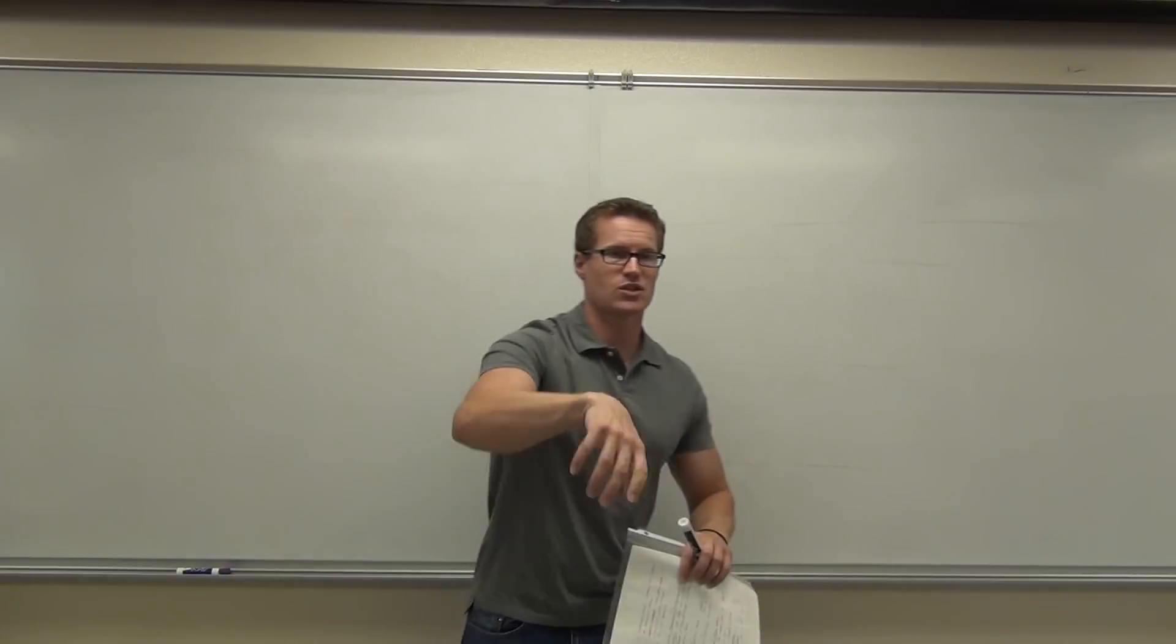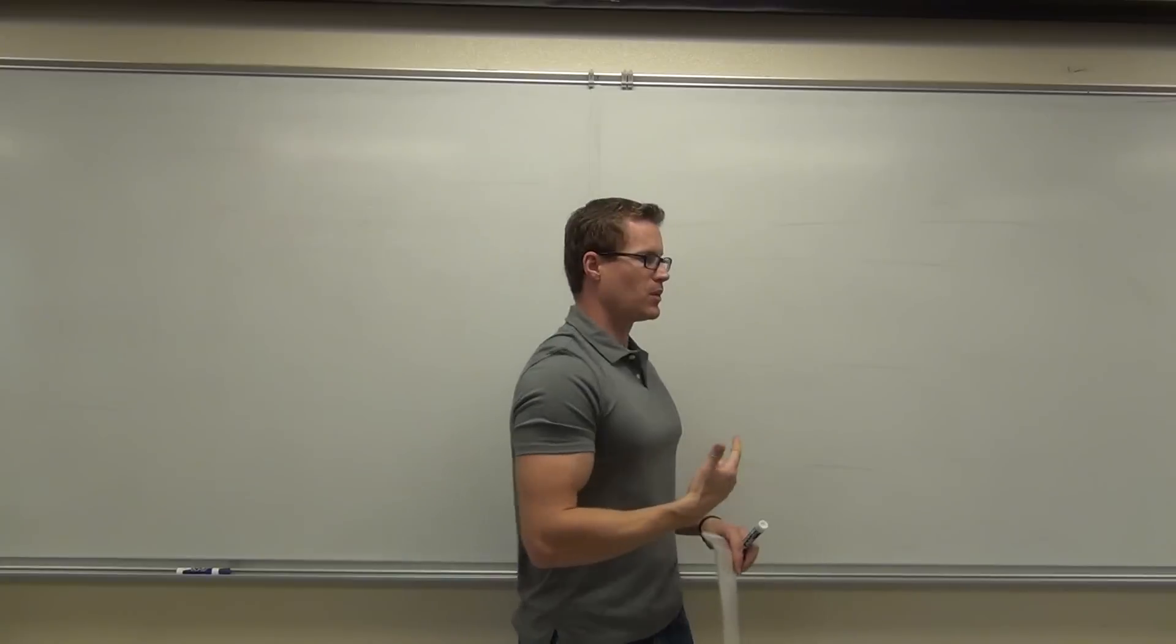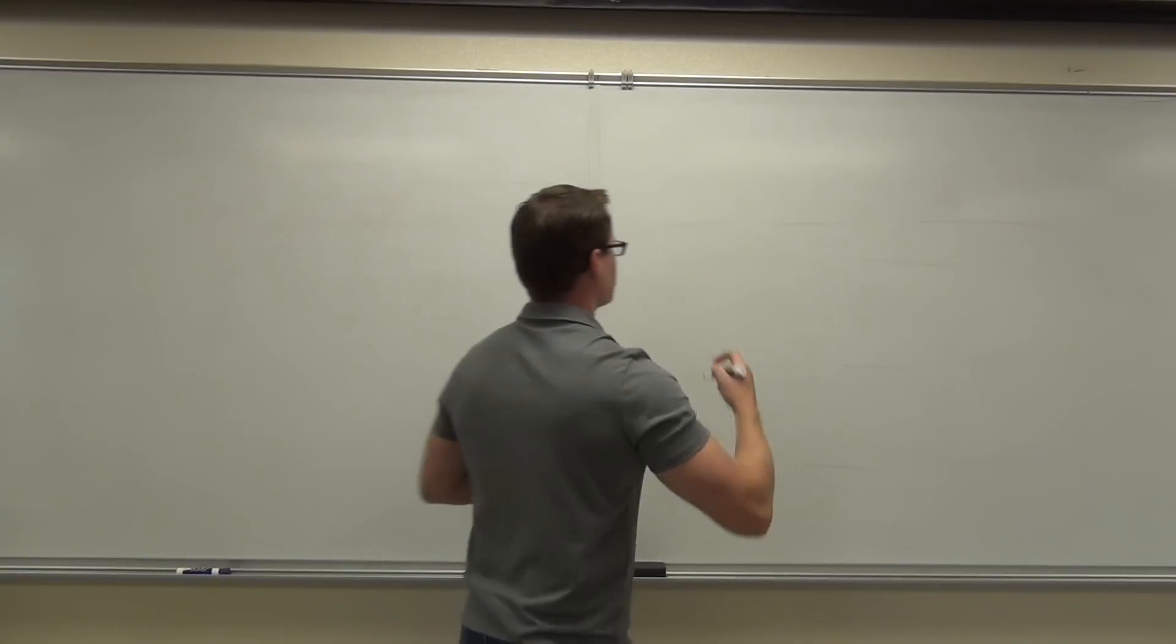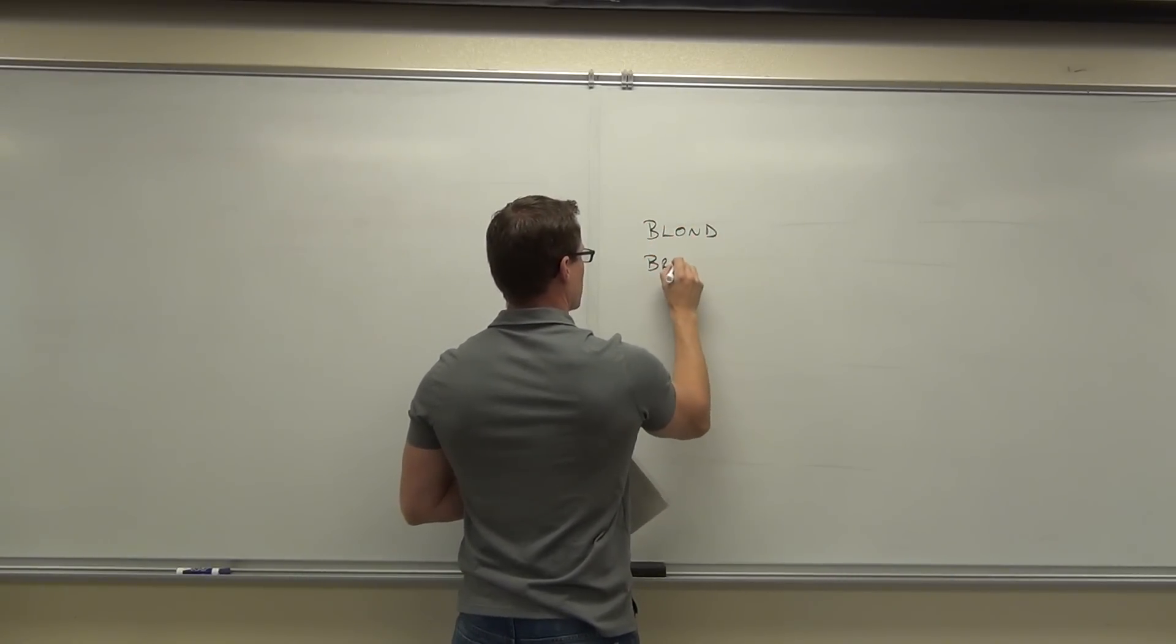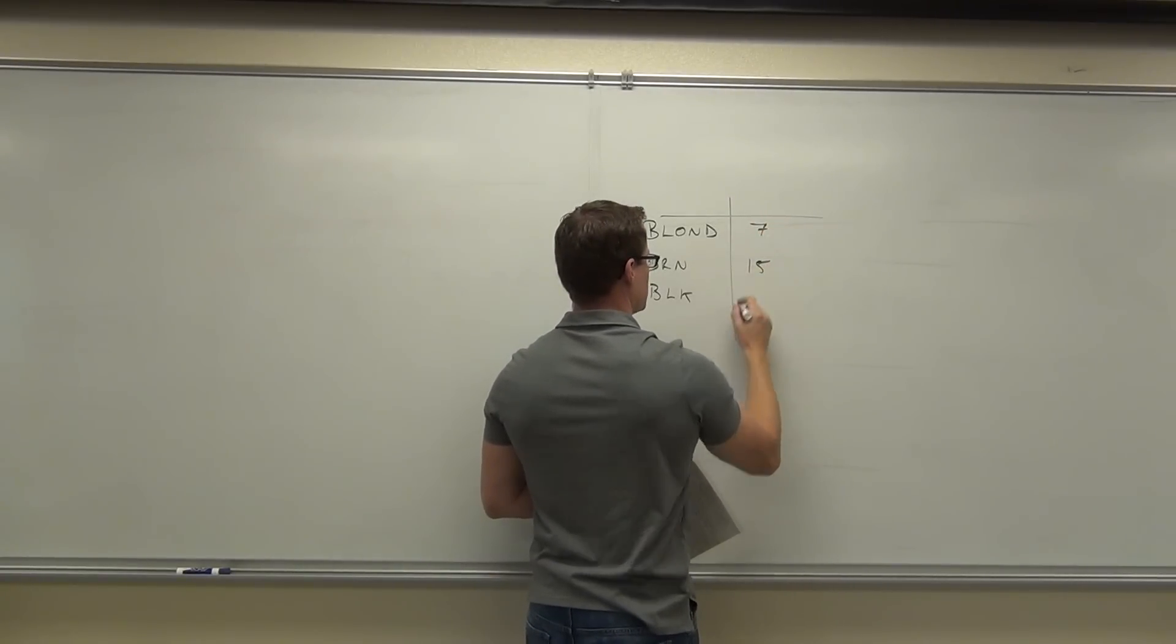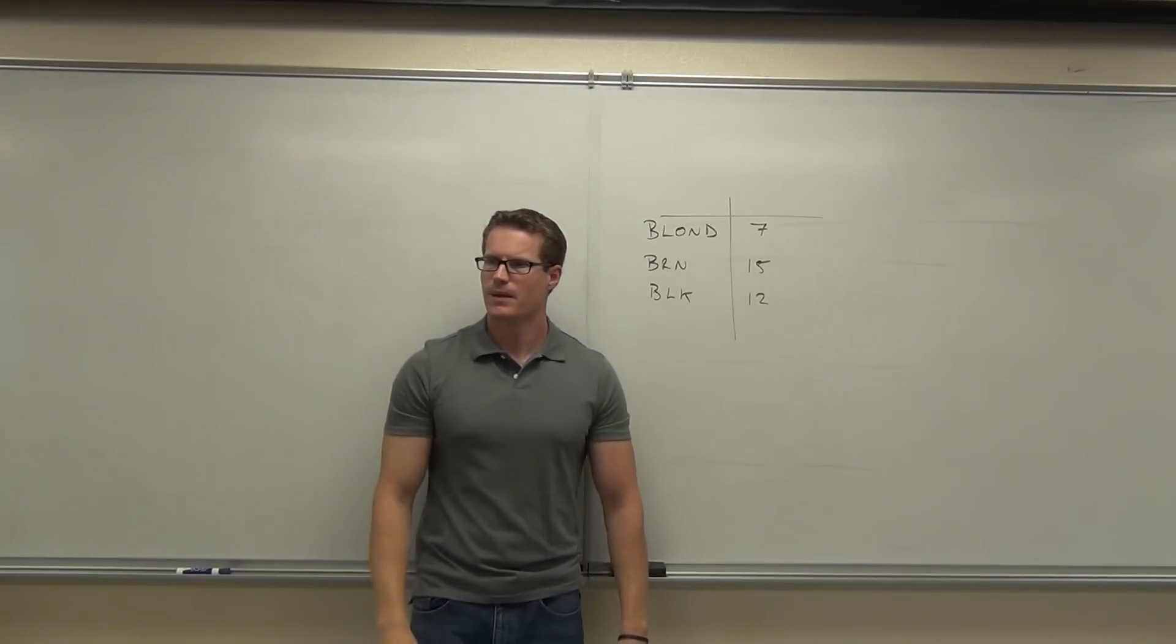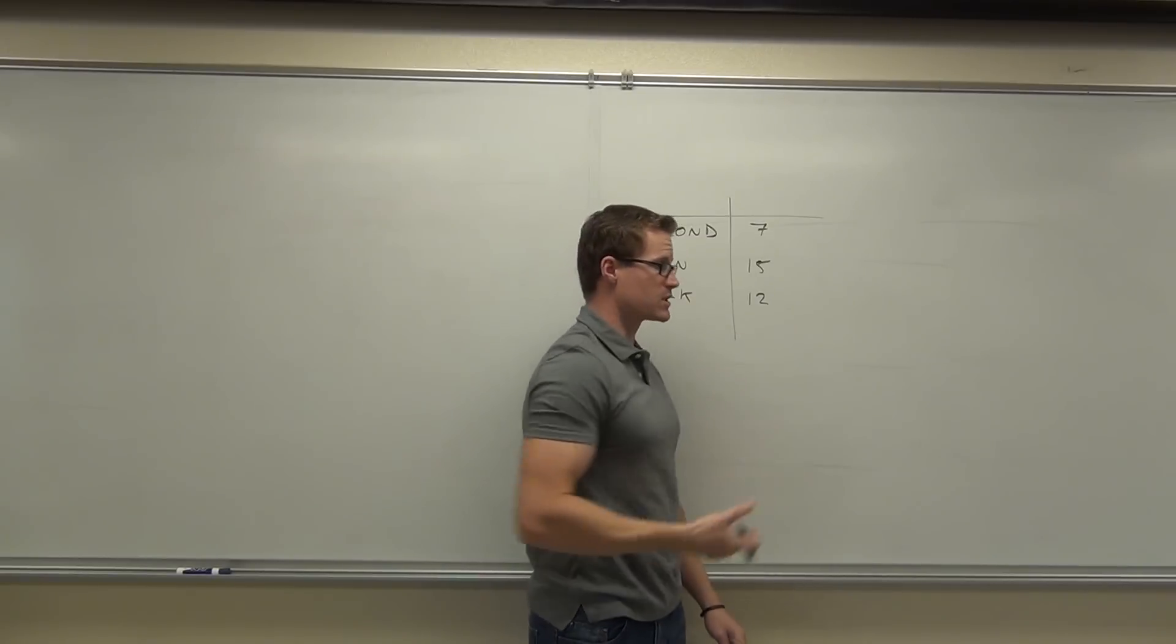If I asked you to look at this classroom and to count the number of brown-haired people and the number of black-haired people and the number of blonde-haired people and put it in a list, this is probably how you'd do it. You'd probably do blonde, brown, black, and count them up and put them right here. 7, 15, 12. This is one of the simplest versions of a frequency distribution that I can think of.